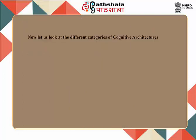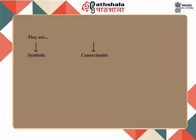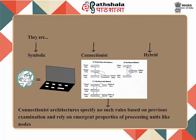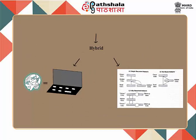Now let us look at the different categories of cognitive architectures. They are symbolic, connectionist, or hybrid. Some symbolic cognitive architectures are based on a set of generic rules, while some are based on the analogy that the mind is like a computer. Connectionist architectures specify no such rules, rely on emergent properties of processing units like nodes, and are based on previous examination. Hybrid architectures combine both types of processing.